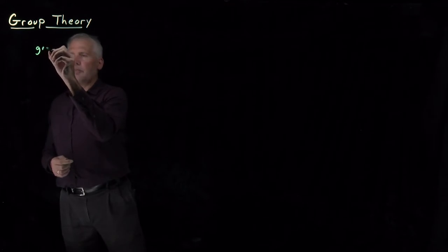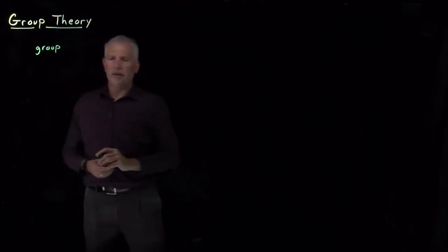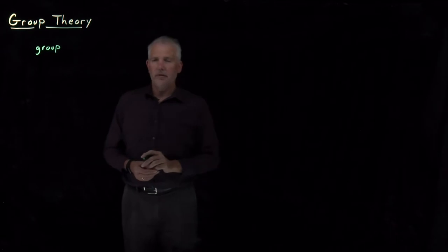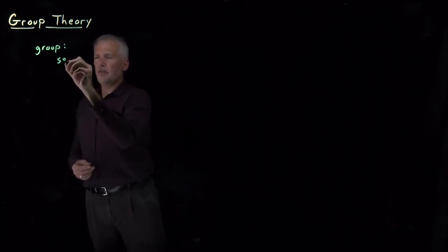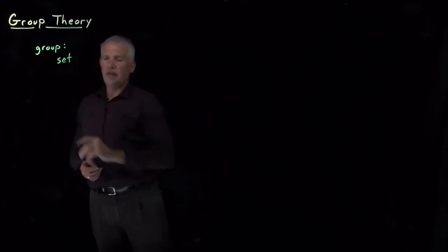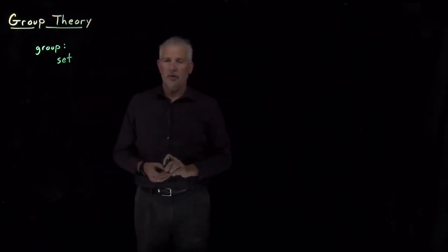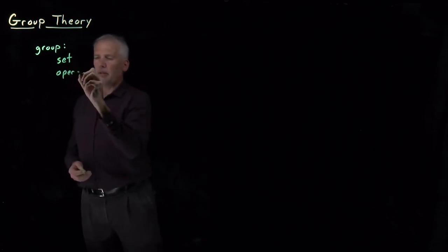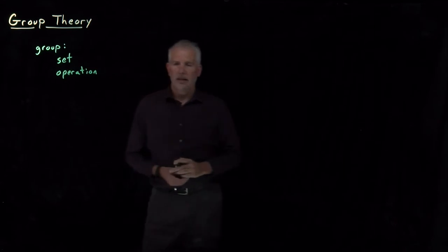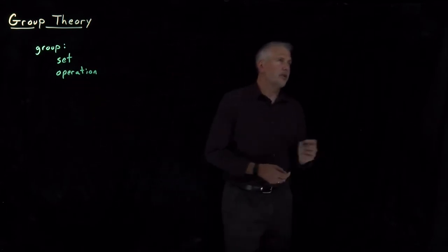It turns out a group is something you're somewhat familiar with by experience already, even if you've not heard that name before. A group consists of two things: a set of elements — a set like you're familiar with from introductory math classes — and an operation that tells you how to combine two elements of that set. To help make this more concrete and understandable, we'll use some examples.